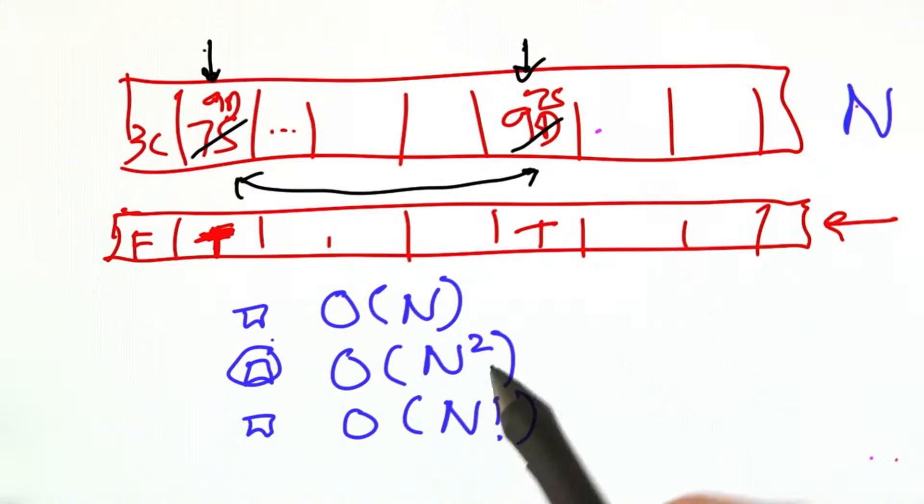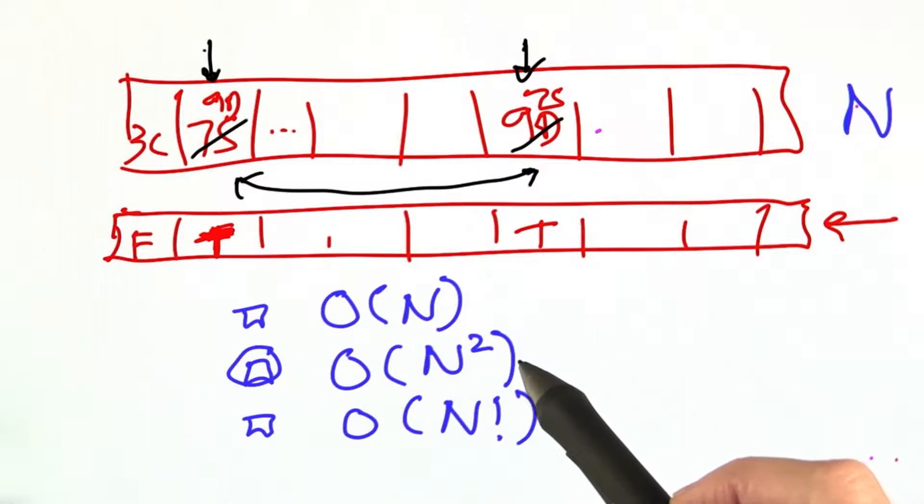And the answer is it will take about n squared on average. It will be more time proportional to n squared.